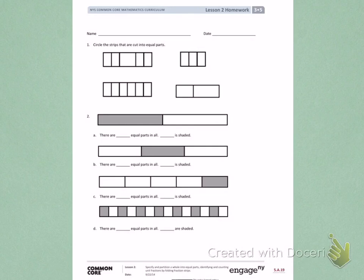Number 1. Circle the strips that are cut into equal parts. When I look at number 1, the first picture, I see this section is larger than the other sections. So I won't circle that because it is not equal parts.